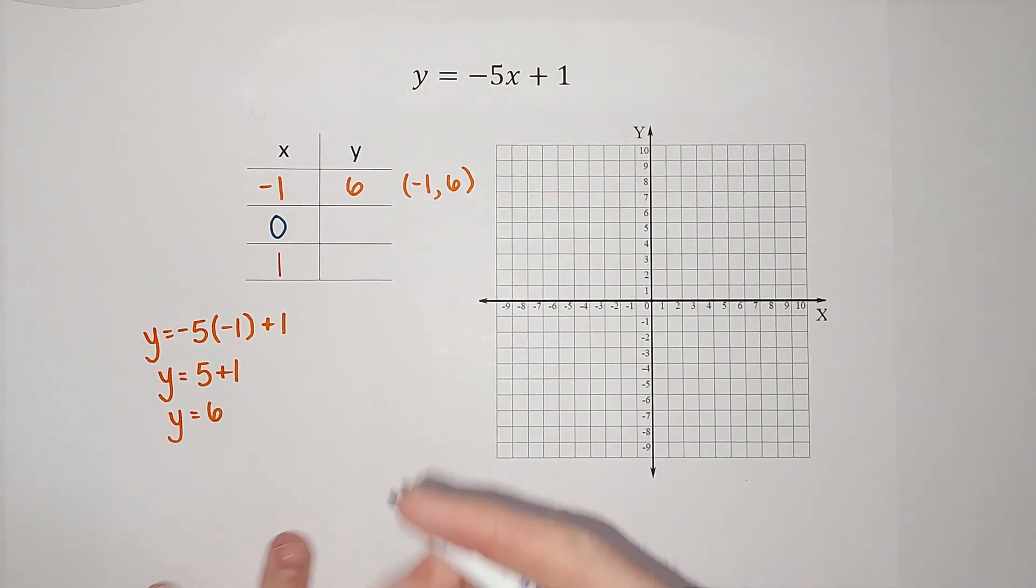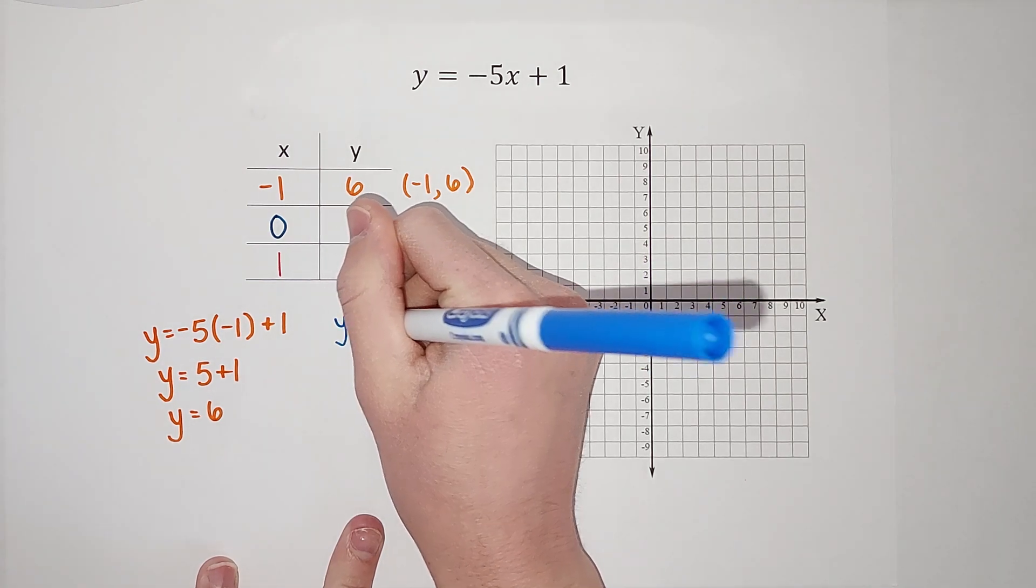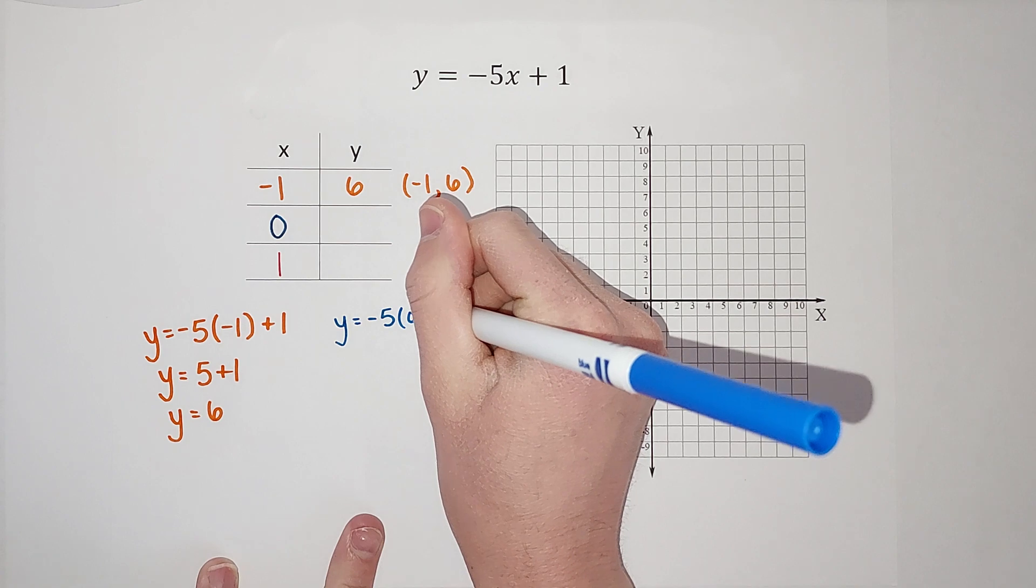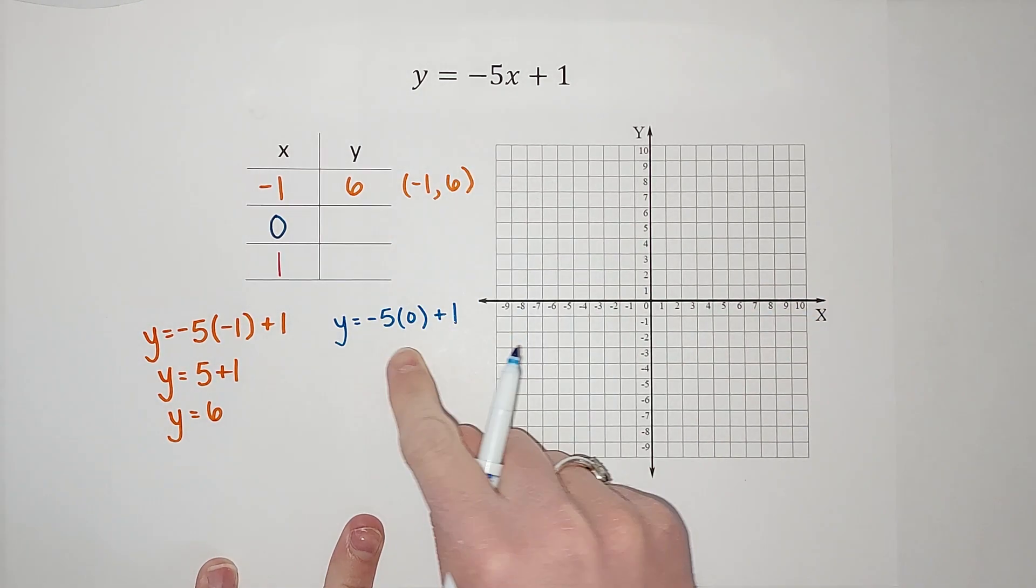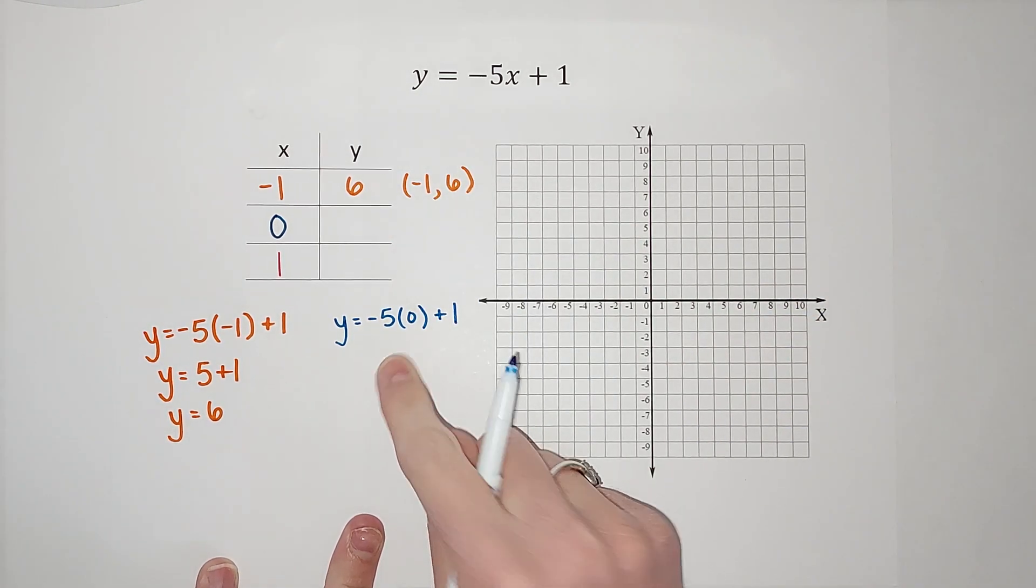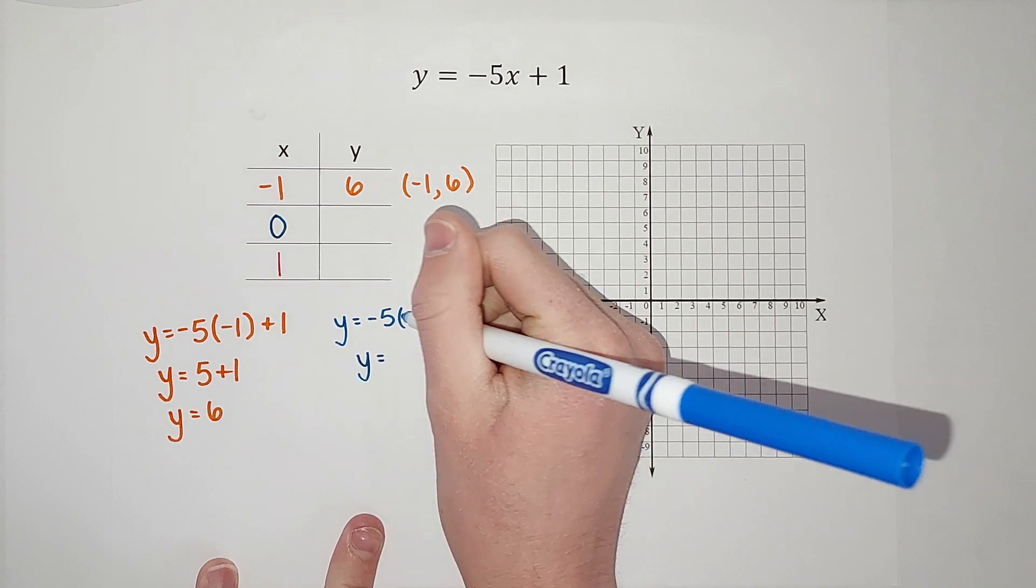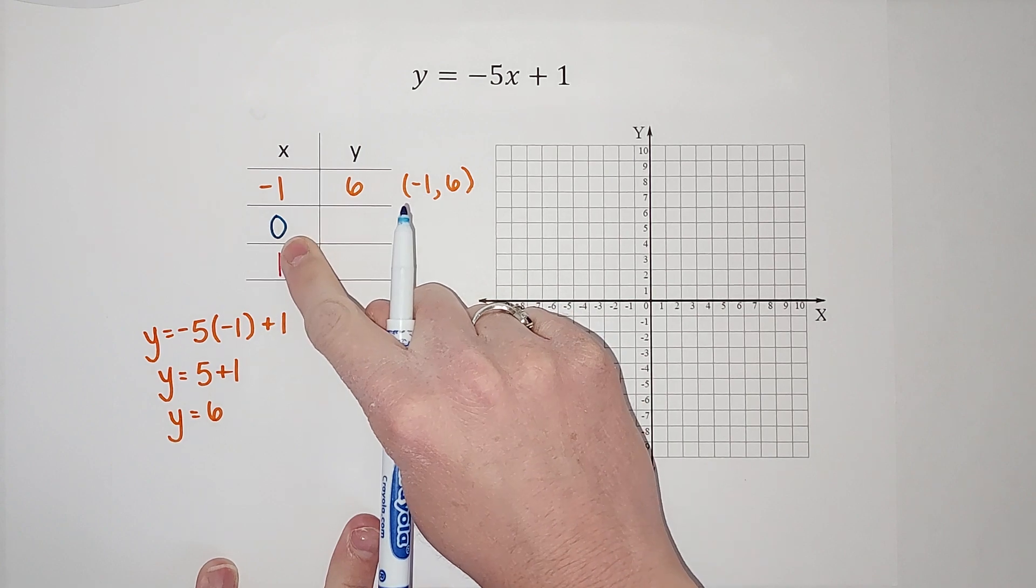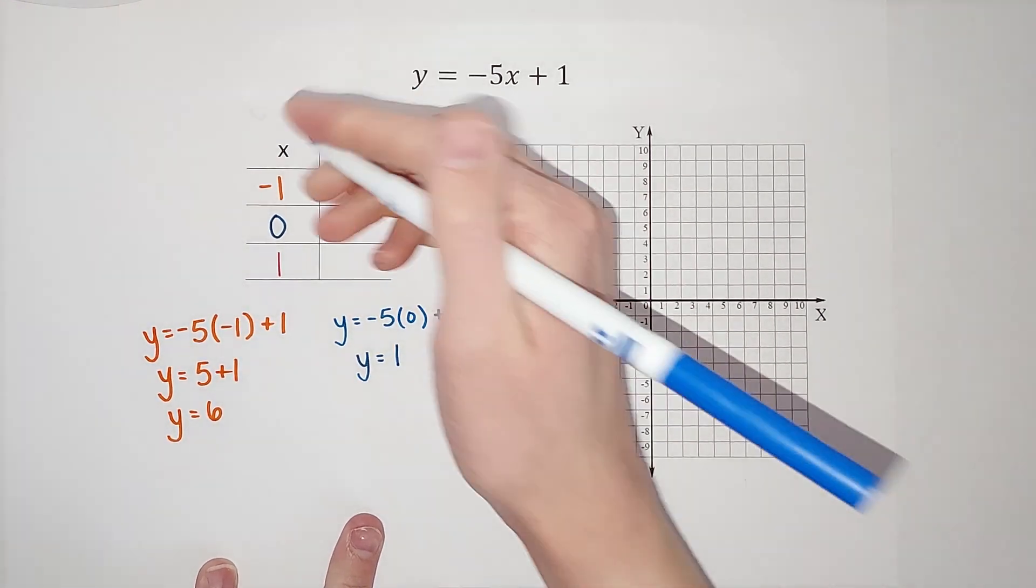Let's plug in zero. This is usually the easiest one because we do Y equals negative five times X, which we are plugging in zero plus one. Anything times zero is zero, right? So I'm left with just zero plus one, which is just one. So when X is zero, Y is one.